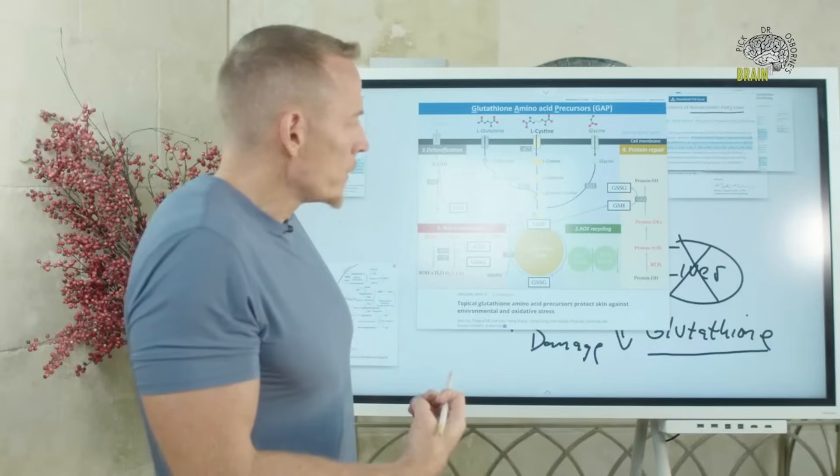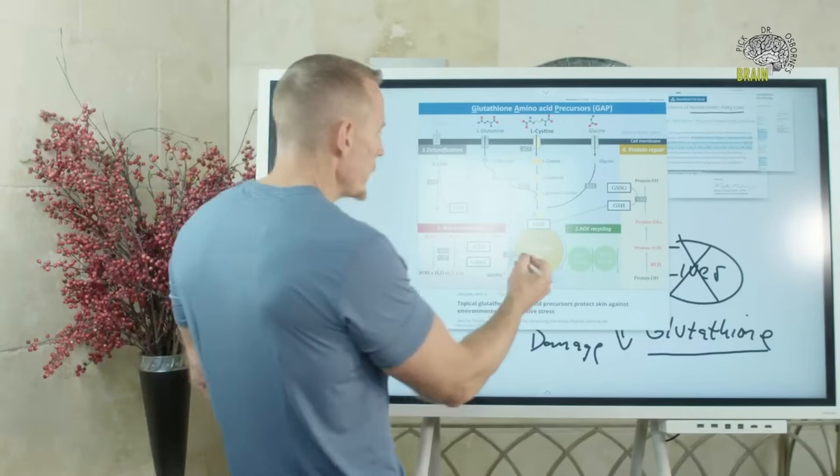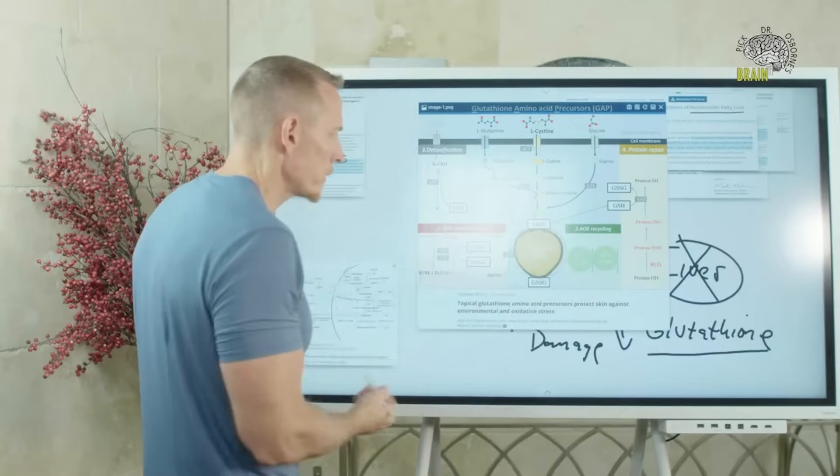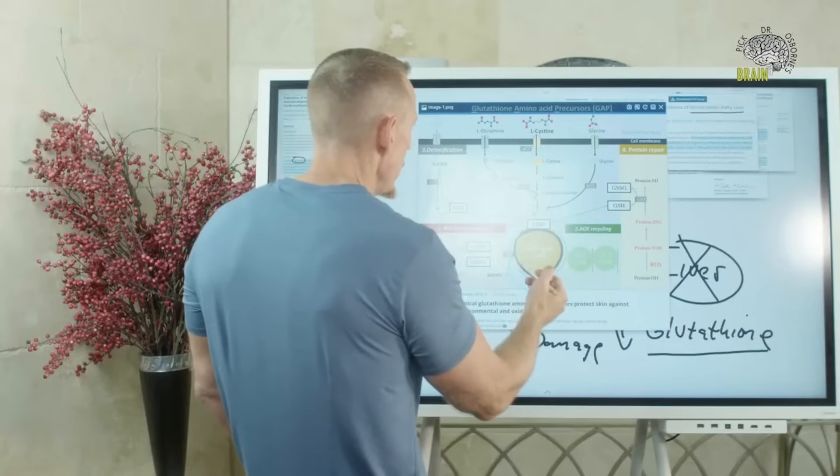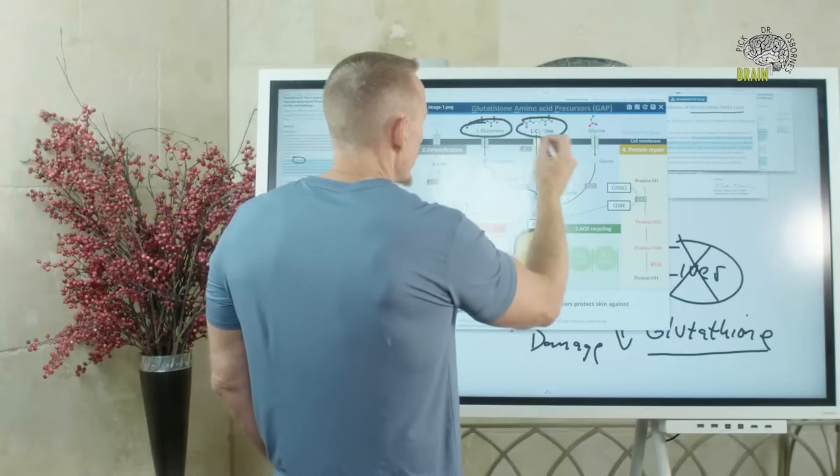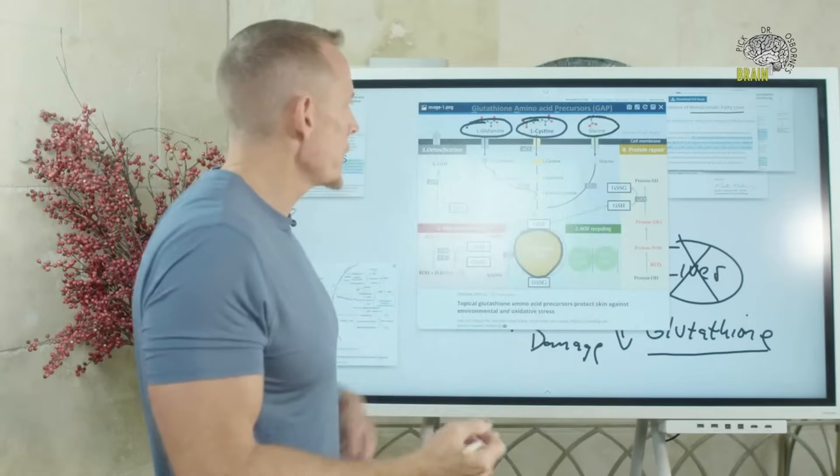That we can reduce the potential risk of this happening? And so the main way is to improve or to enhance glutathione. So if we look at this GSH, this is glutathione. And one of the core structures of glutathione is its amino acid component.